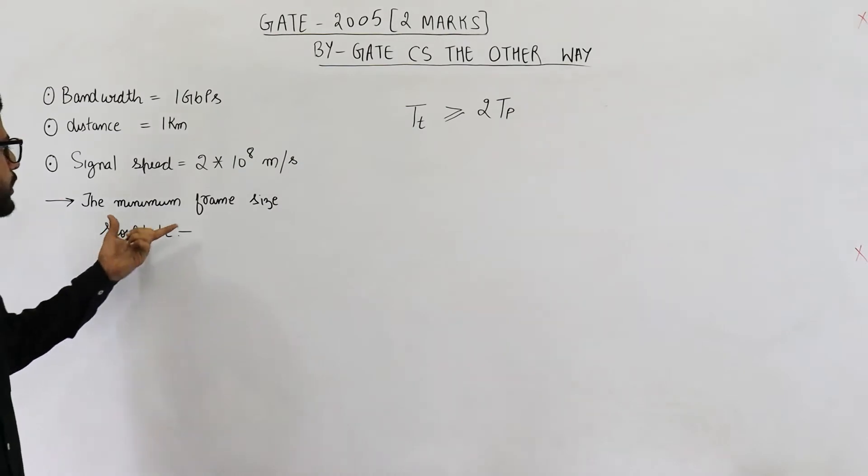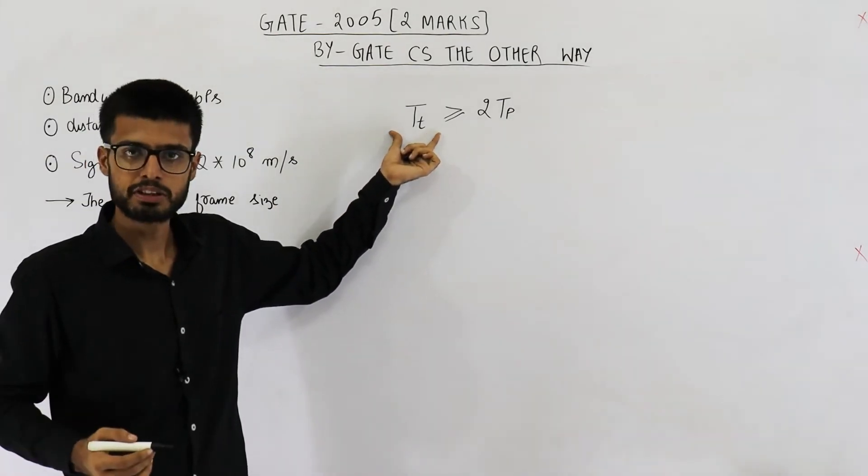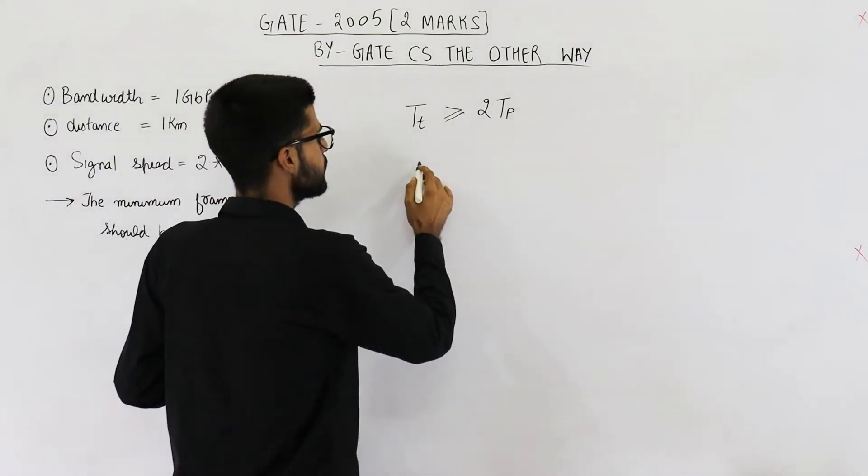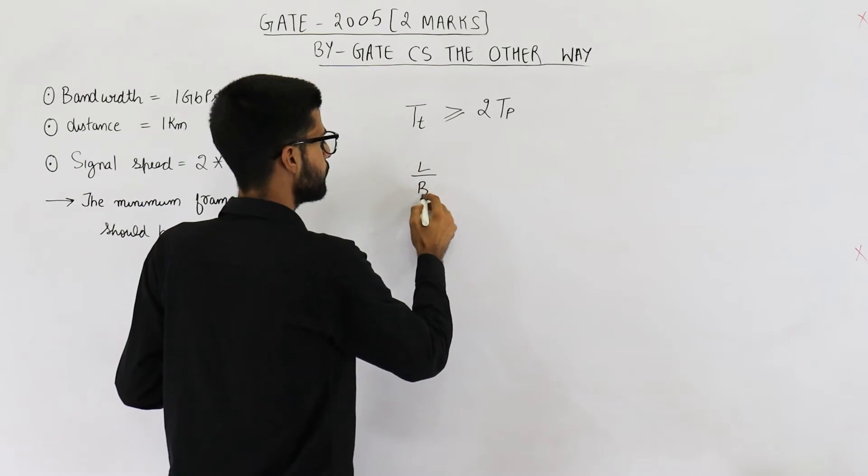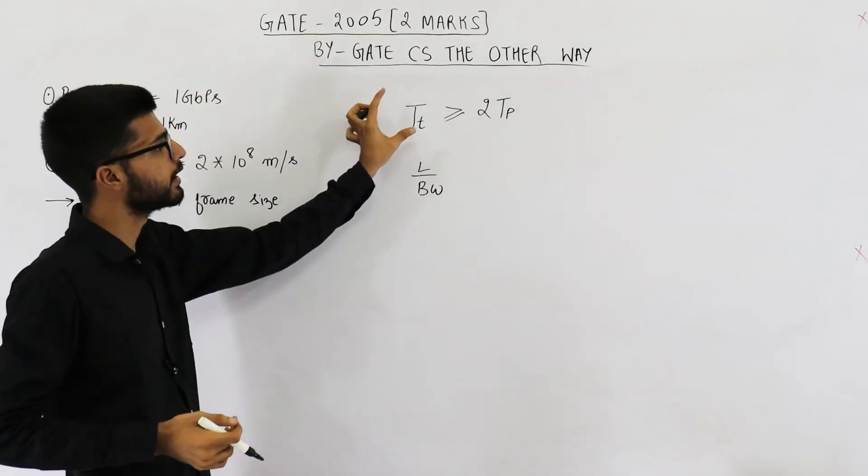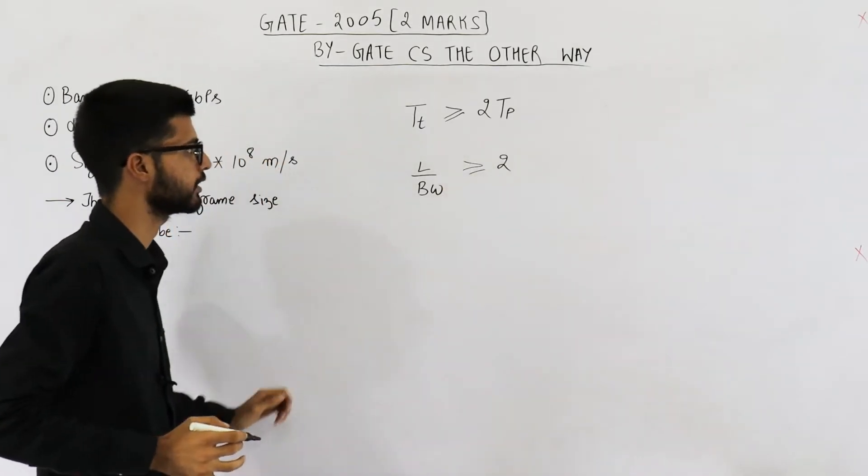From here, we can find out the minimum frame size because TT, which is the transmission time, is dependent on the frame size. So TT can be written as L by bandwidth. L is length of packet divided by the bandwidth gives you transmission time. And this has to be greater than or equal to twice of propagation delay.